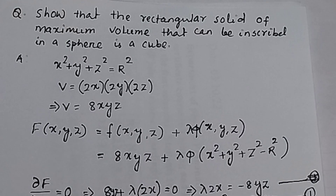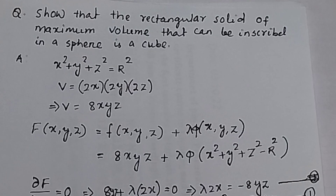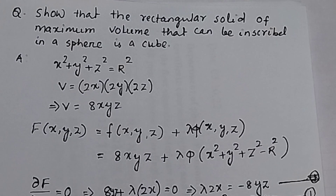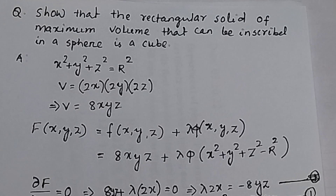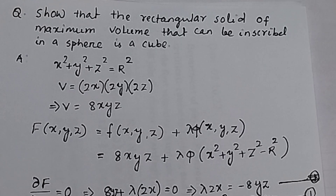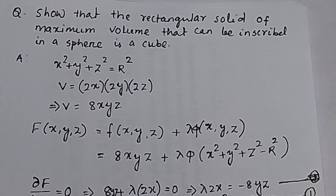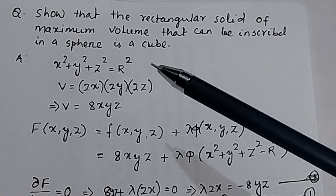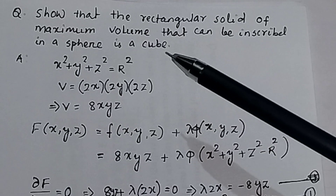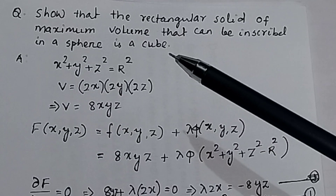This question we will solve by using constraint maximization using the Lagrange multiplier. The rectangular solid of maximum volume that can be inscribed in a sphere is a cube. Suppose you are given a sphere and inside the sphere you are given a rectangular volume element — that rectangular volume is equal to a sphere, that will be a cube. You have to prove it.